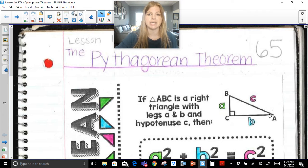It says if triangle ABC is a right triangle with legs A and B, so the legs are the two sides of a right triangle that create a right angle, and hypotenuse C. C is the hypotenuse, it's always the longest side of a right triangle, and it's always the side that's directly across from the 90 degree angle.